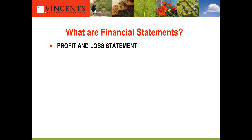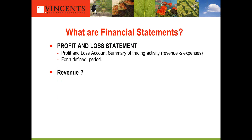The profit and loss statement is a summary of trading activity — the revenue and expenses — for a defined period, for example the year ended 30 June 2014. If you're looking at that statement and it shows sales of a million dollars, you don't know whether they made one sale for a million dollars or a million sales of one dollar. All it tells you is the total dollar value of all those sales was a million dollars. I'll come to later how you can find out what makes up that million.